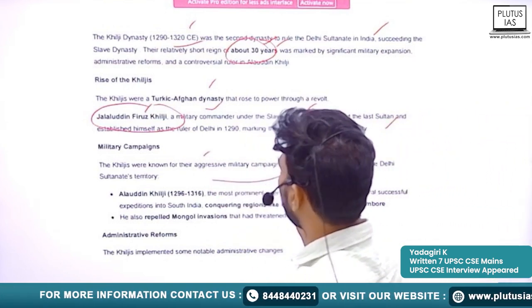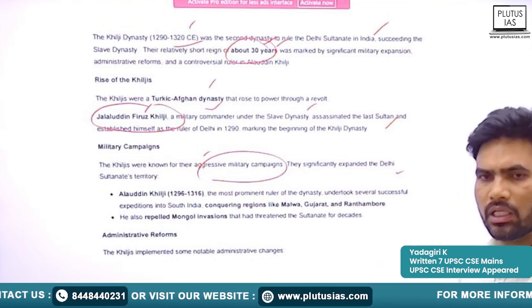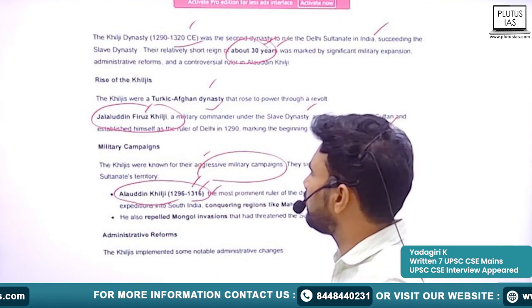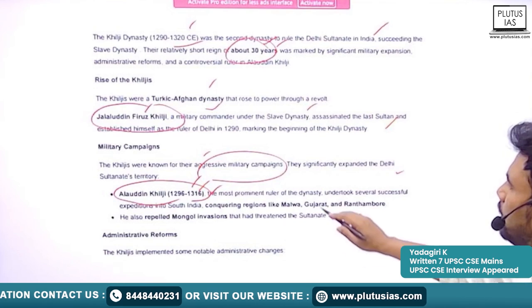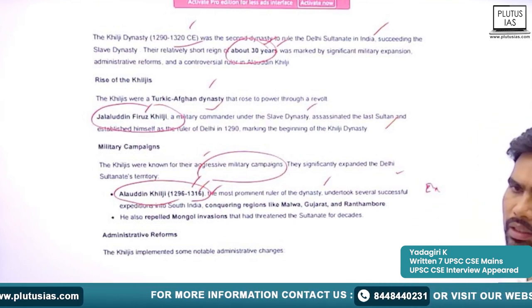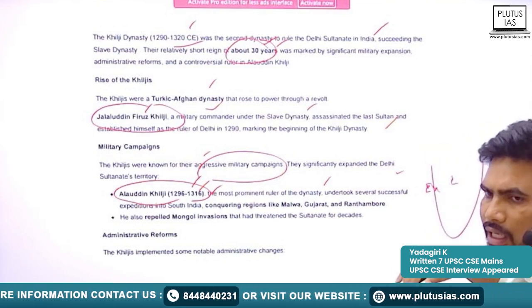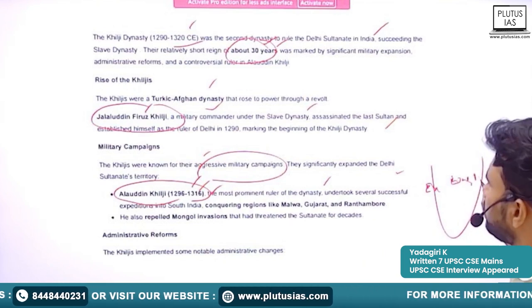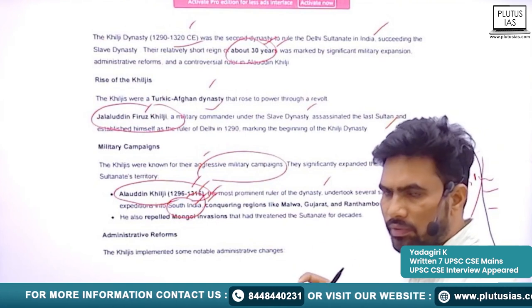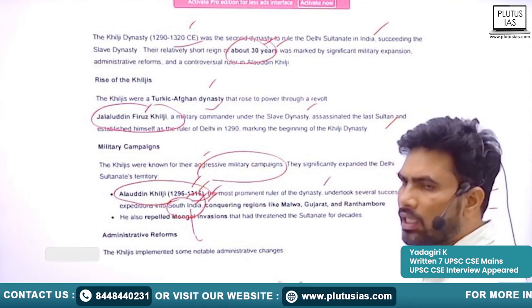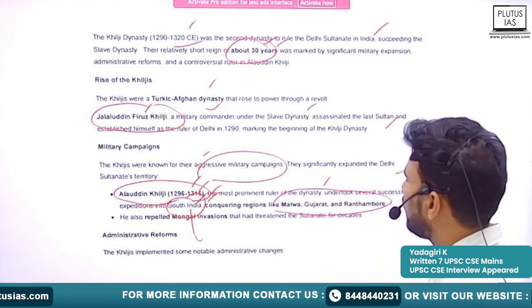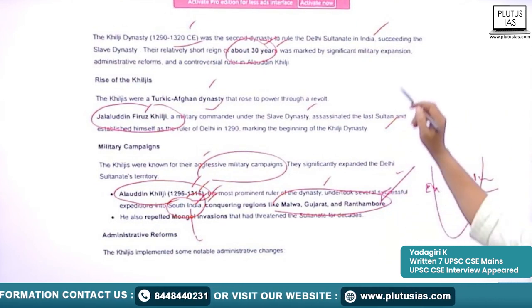The Khalji Dynasty was known for aggressive military campaigns and significantly expanded Delhi Sultanate's territory. The most important ruler is Alauddin Khalji, who ruled between 1296 to 1316. He is the most prominent ruler in the Khalji Dynasty. During his rule, we see the expansion of the territorial territory of the Delhi Sultanate. He was engaged in waging wars during his entire ruling period. He conquered regions like Malwa, Gujarat, and Ranthambore, mostly concentrating his attacks in the Rajputana.